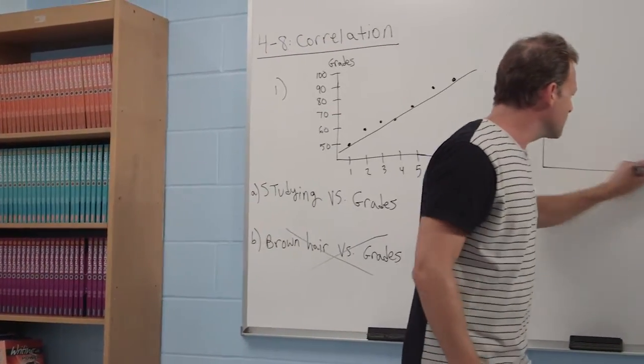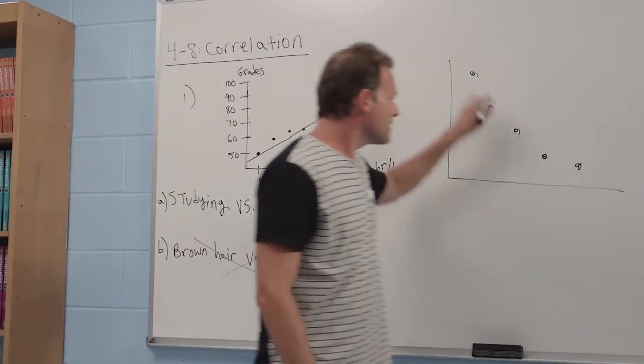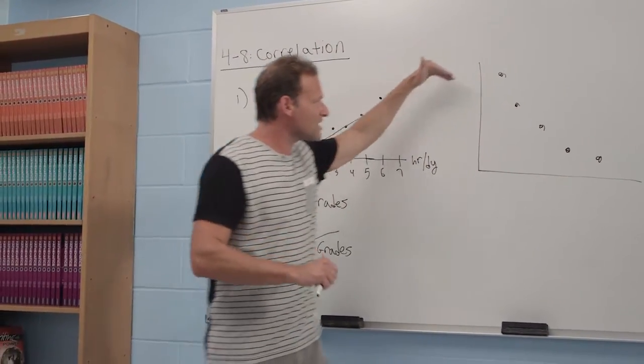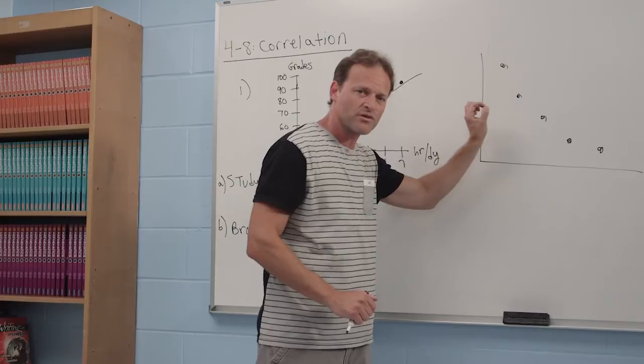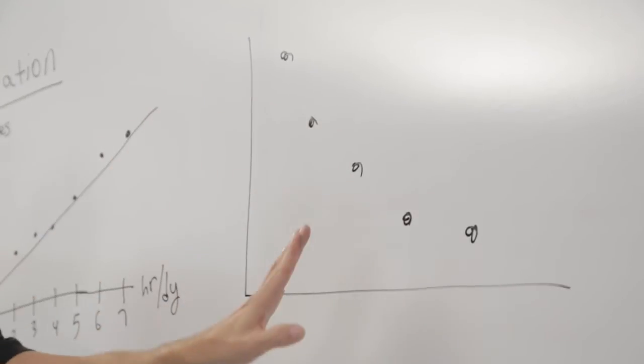Sometimes you might see dots that go down. If you see something that looks like a pattern, even though it's not a perfect straight line, that's a correlation. In this case, it would be called a negative correlation.